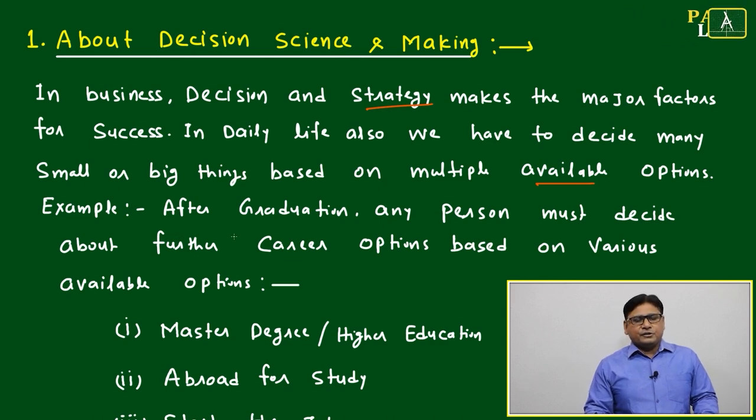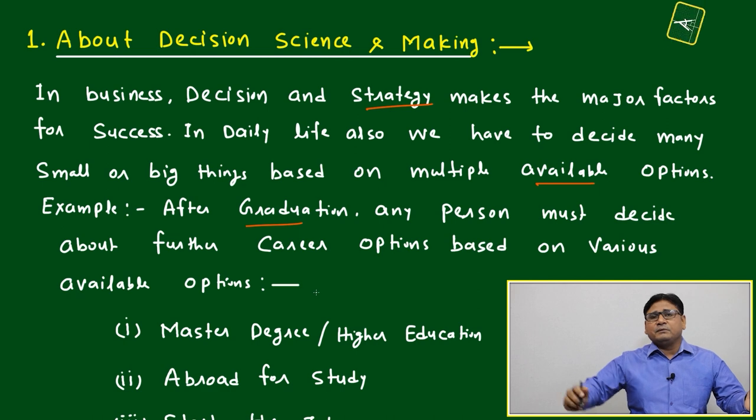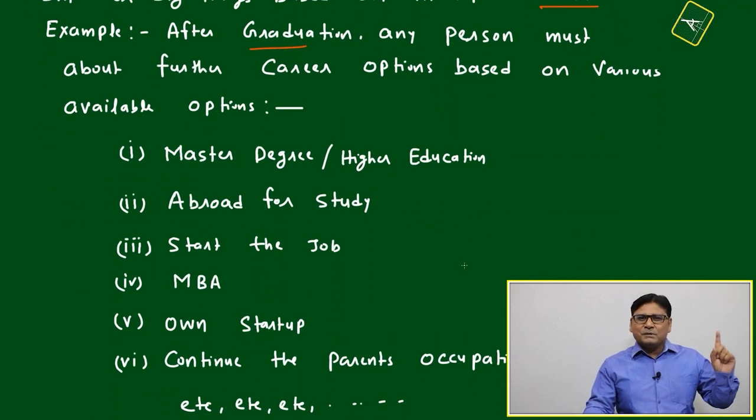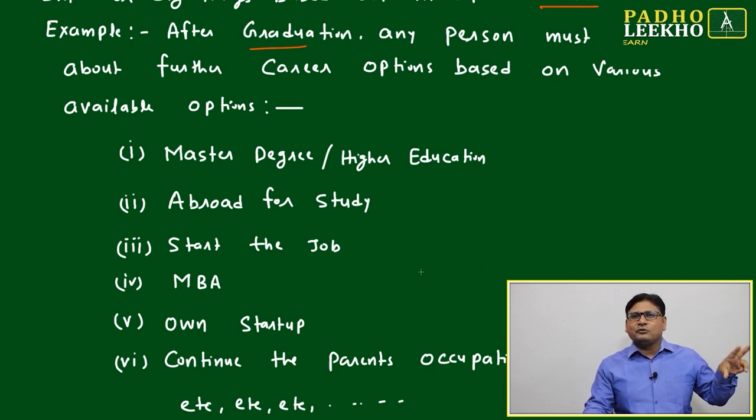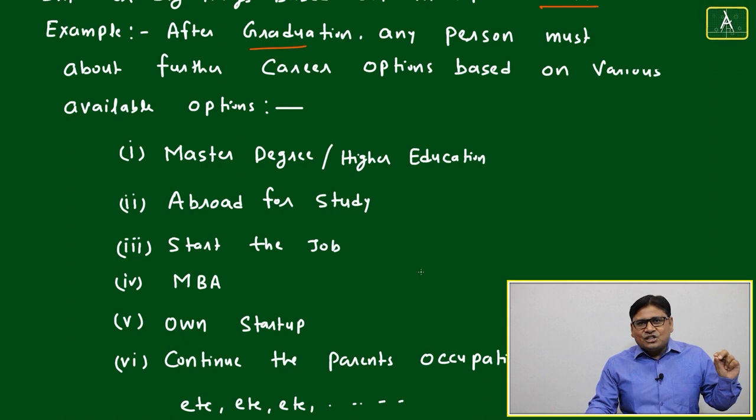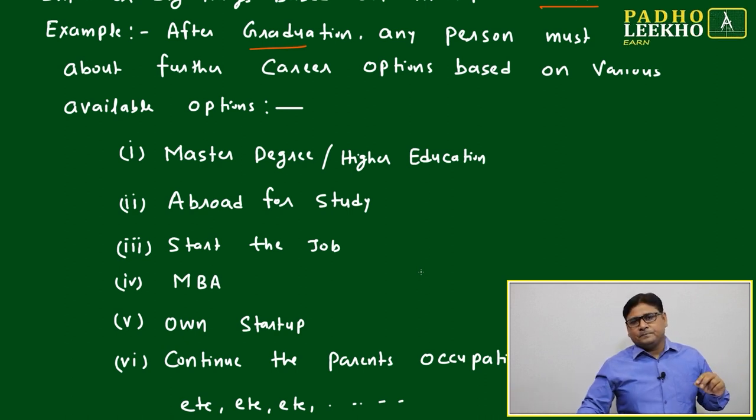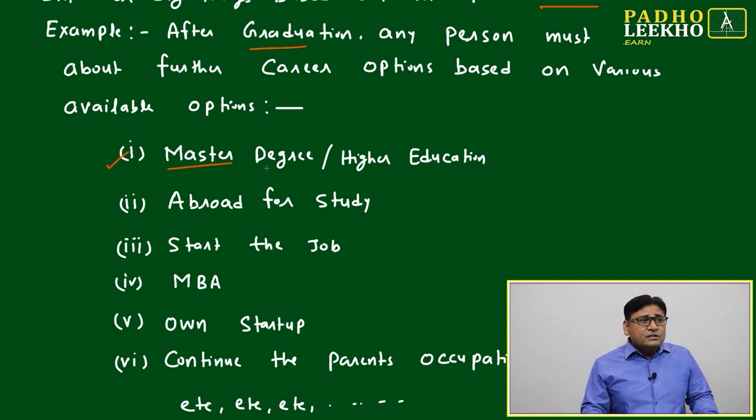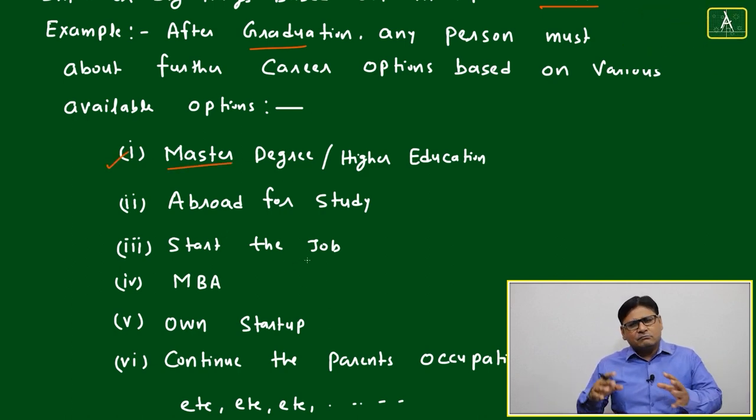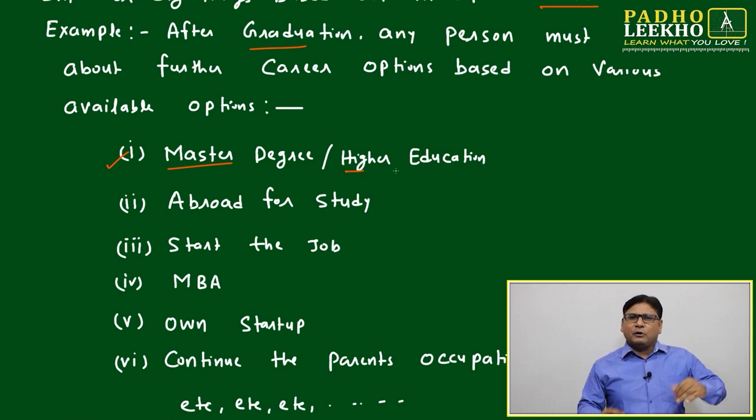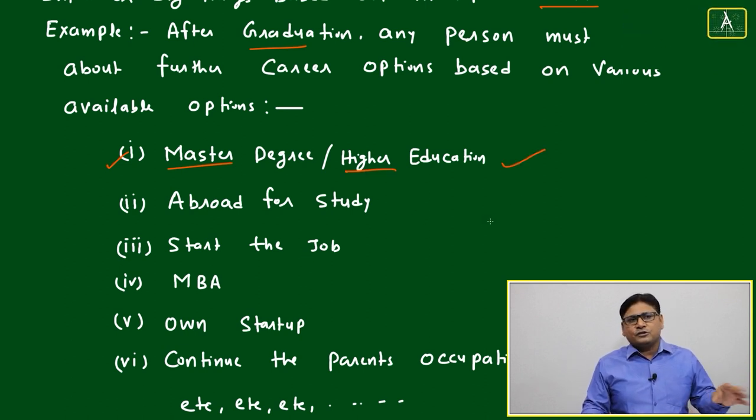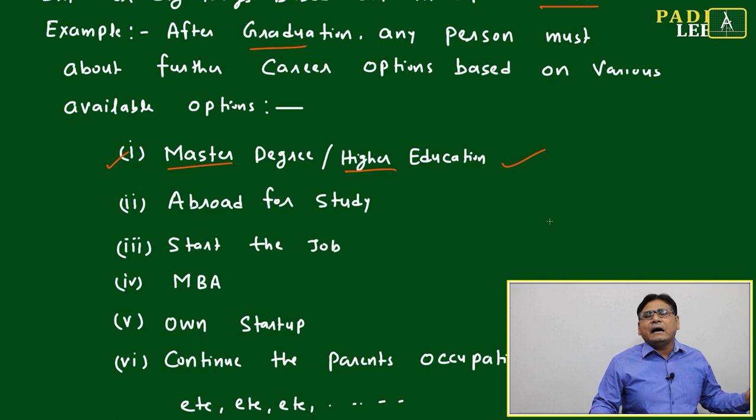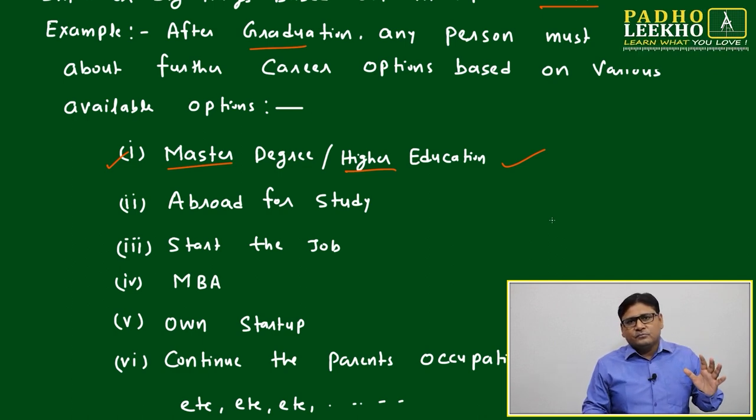One kind of decision will be to go for master's degree or higher education - not only master's, maybe PhD, not only PhD but postdoctoral research. 0.1% people will be in your surrounding who are interested to go for higher and higher education and further want to build their career in academics or maybe something else. Abroad for study - one group of people are very desperate: 'I want to go to Canada, I want to go to Australia.' For what? For study purposes. They don't know what are the pros and cons, but they want to leave India at any cost. They're passionate about other countries, whatever the reason.